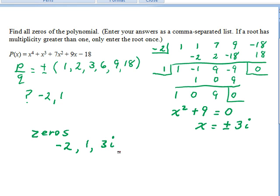3i, and negative 3i. The last two are imaginary. The first two are real.